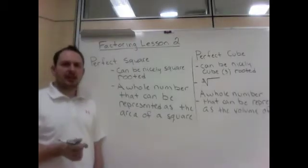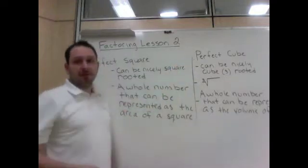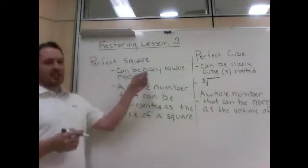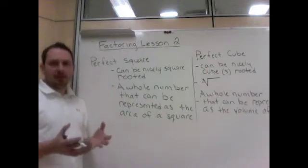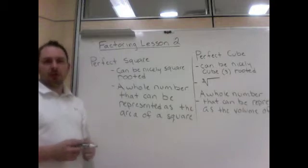Some questions we're going to look at today are going to involve definitions perfect square and perfect cube. So first of all, a perfect square is a number that can be nicely square rooted, and by nicely I mean it can become, once it's square rooted, a whole number, like 1, 2, 3, 4, 5.